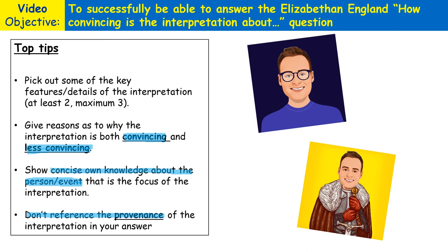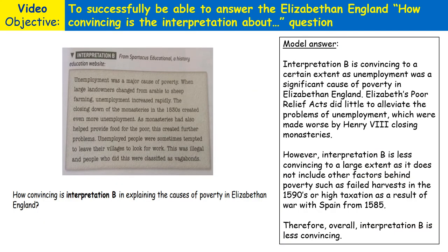Let's have a look now at a model answer. Here's our model answer on the right-hand side of the video, and on the left we've got our interpretation and question. Here is an interpretation from a website on causes of poverty in Elizabethan England. This interpretation is really just focusing on unemployment being the main cause or most significant cause of poverty, as we can see here.